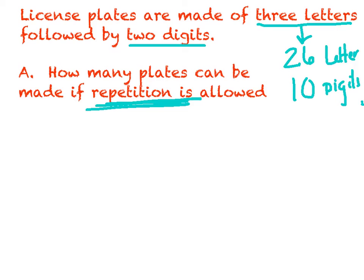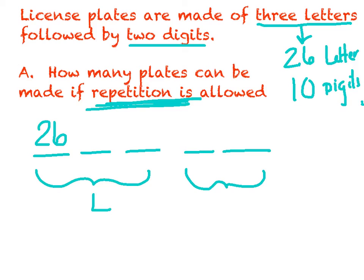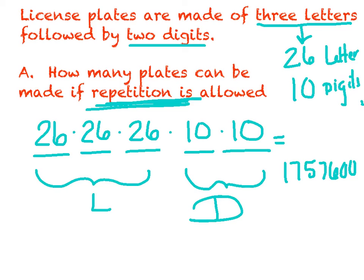So if you're allowed to repeat, I'm just going to draw some lines to represent these sections. These three represent letters, and then I'm followed by two digits. And if I can repeat, well, I have 26 options for my first letter. And if I'm allowed to repeat, I have 26 for the next, 26 for the next. Digits, I have 10 digits to choose from, and if I can repeat, I've got 10 more digits. And then basically, remember, when these things are all next to each other, we're just simply going to multiply. And I've got 1,757,600.